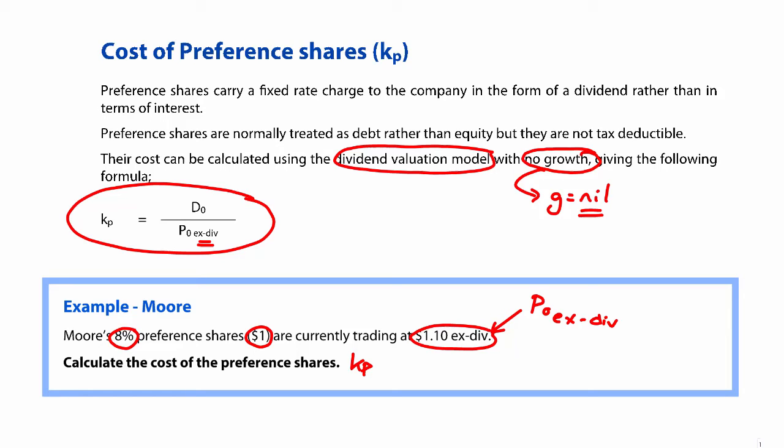So to perform the calculation, it should be nice and straightforward. The dividend is going to be 8% of the par value. So that's vitally important that you make sure you take the coupon rate based upon the par value and not the market value. And then we divide that by the market value ex-div at $1.10. If you tap that into your calculator, you should have 0.08 divided by 1.10.